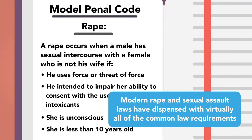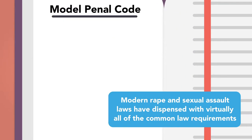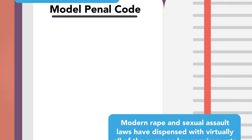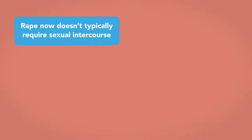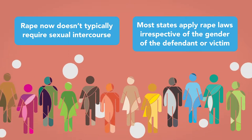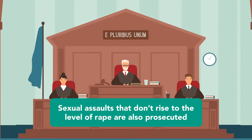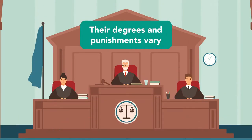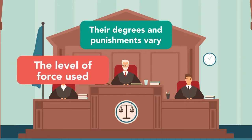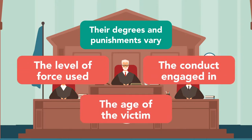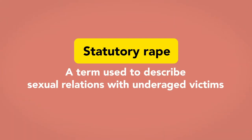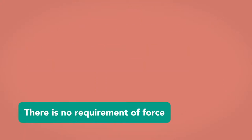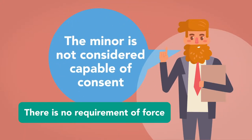Modern rape and sexual assault laws have dispensed with virtually all of the common law requirements. Rape now doesn't typically require sexual intercourse, and most states apply rape laws irrespective of the gender of the defendant or the victim. Sexual assaults that don't rise to the level of rape are also prosecuted, and their degrees and punishments vary based on the level of force used, the conduct engaged in, and the age of the victim.